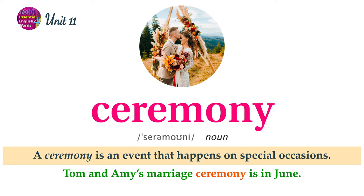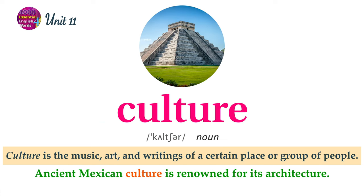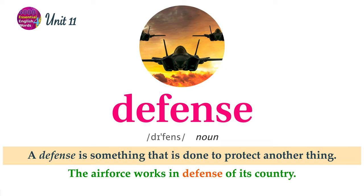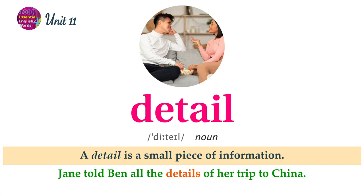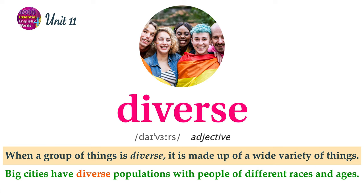A ceremony is an event that happens on special occasions. Tom and Amy's marriage ceremony is in June. Culture is the music, art, and writings of a certain place or group of people. Ancient Mexican culture is renowned for its architecture. A defense is something that is done to protect another thing. The Air Force works in defense of its country. A detail is a small piece of information. Jane told Ben all the details of her trip to China. When a group of things is diverse, it is made up of a wide variety of things. Big cities have diverse populations with people of different races and ages.